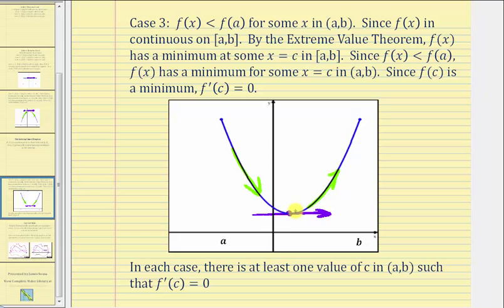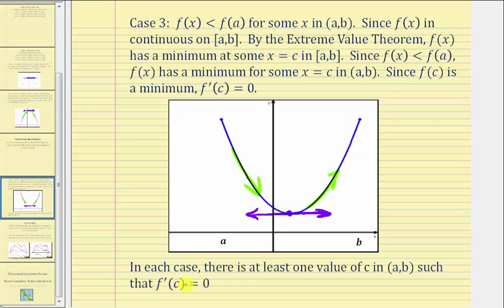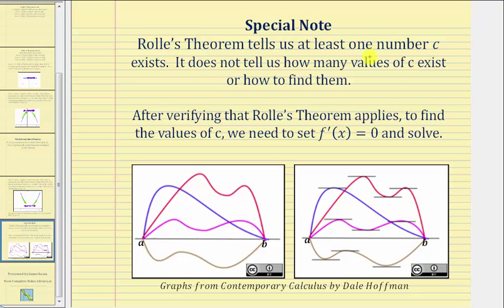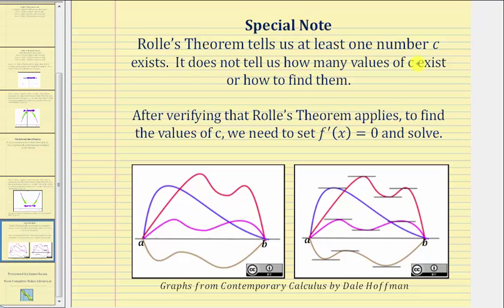Notice in each case there's at least one value of c in the open interval such that f prime of c equals zero. Rolle's Theorem tells us at least one number c exists, but it does not tell us how many values of c exist or how to find them. Referring back to the first graph, notice how these functions have several values of c where f prime of c would be equal to zero, but for our proof we only had to prove there exists at least one c in the open interval. When using Rolle's Theorem, after verifying it applies, to find the values of c we need to set f prime of x equal to zero and solve.